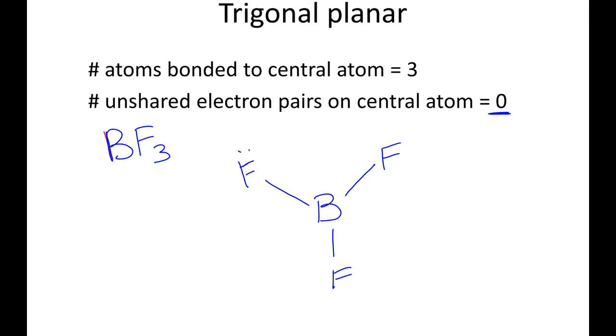So when I draw boron trifluoride, it looks like this. There are no unshared pairs. Do not put electrons. Do not do this. That is not right. Don't do it. In fact, we're going to erase it. It doesn't have those unshared pairs. And when you count up the number of electrons, you can't have unshared pairs. So it's just one of the exceptions that you just have to learn. So boron only does three, it shares out its three electrons. So there's my trigonal planar shape.